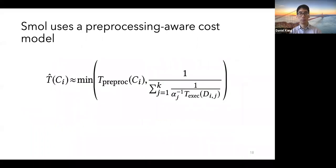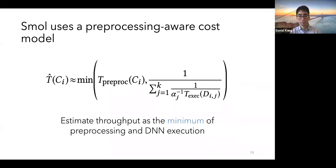In contrast, Smol uses a pre-processing aware cost model. And as we can see here, it uses a very simple modification, which is the minimum of the pre-processing throughput and the inverse sum of the throughputs of the deep neural networks that are being executed. And while this change is simple, we'll show that it results in better cost estimation in our evaluation.